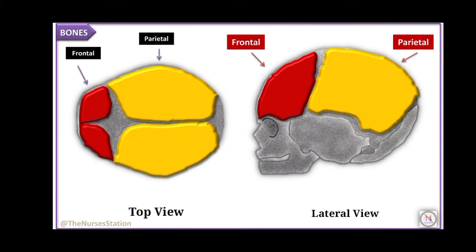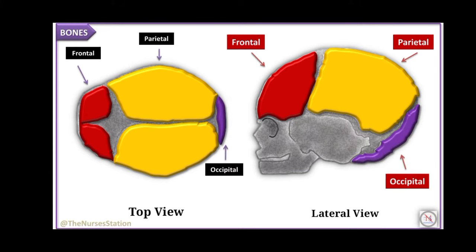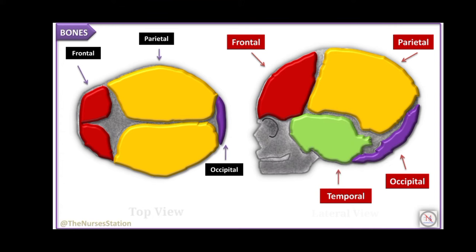There are two parietal bones superiorly. The ossification centers of the parietal bones are called parietal eminences. One occipital bone lies at the back of the head and forms the region of the occiput. Part of the occipital bone contributes to the base of the skull as it contains the foramen magnum, which protects the spinal cord as it leaves the skull. Laterally, there are two temporal bones.